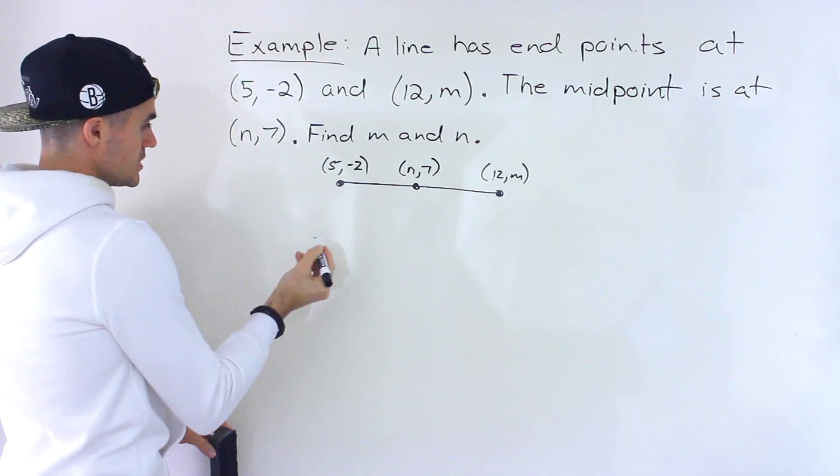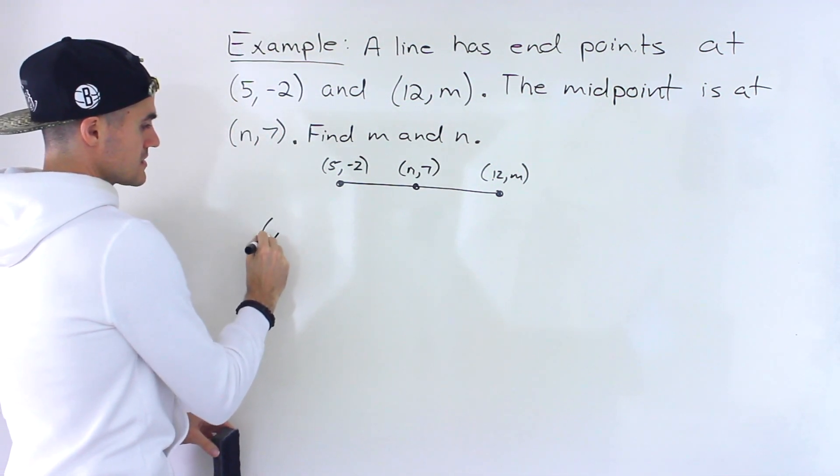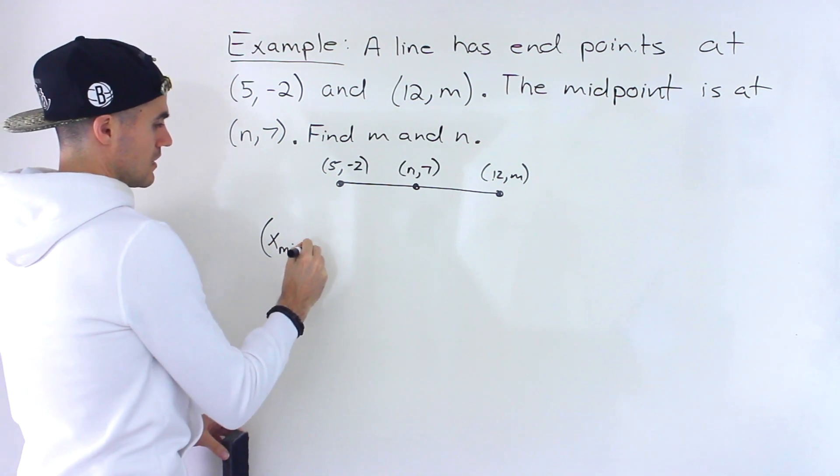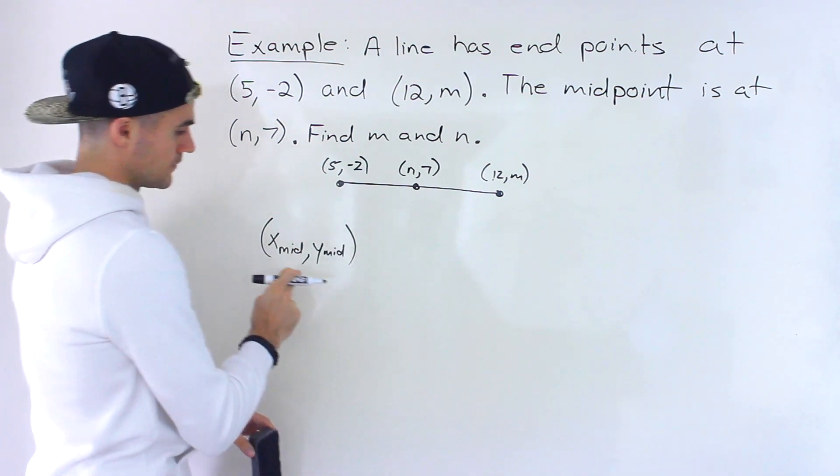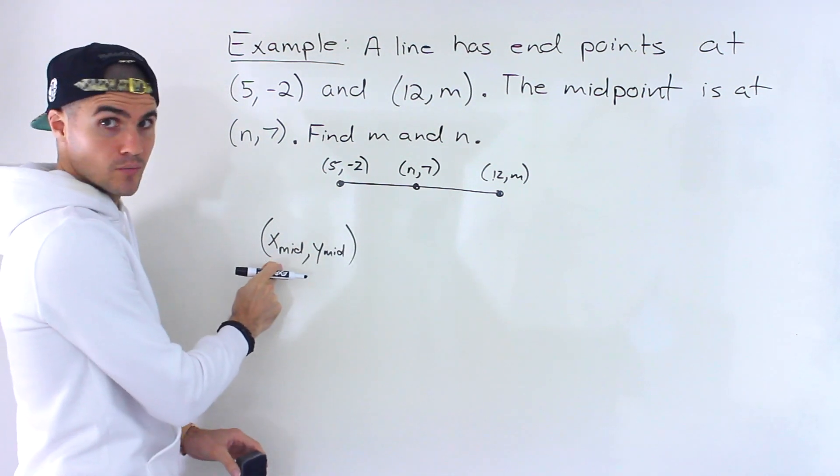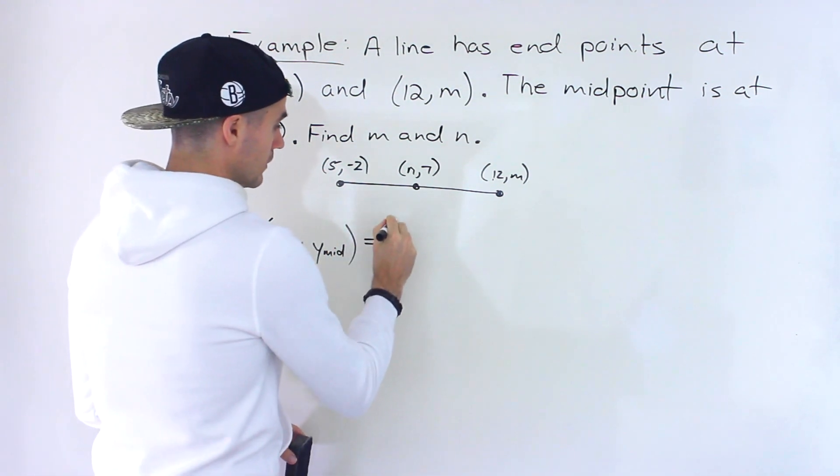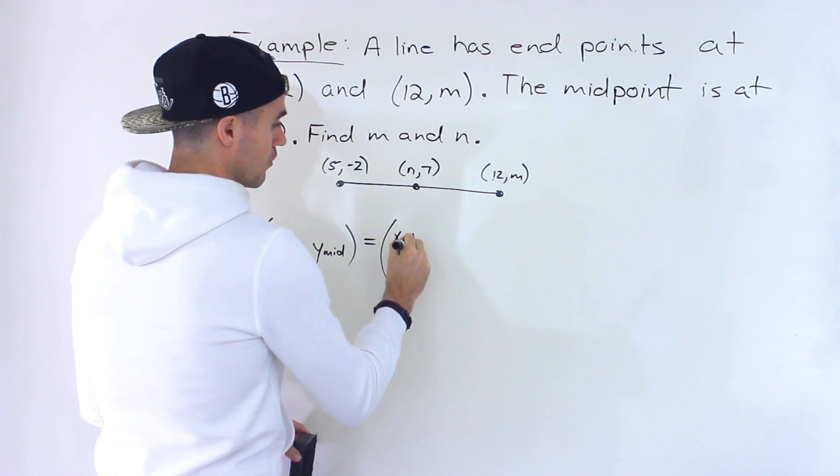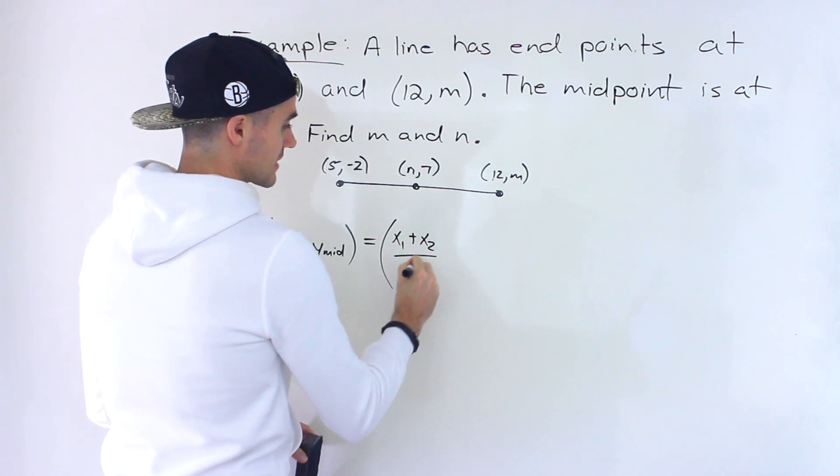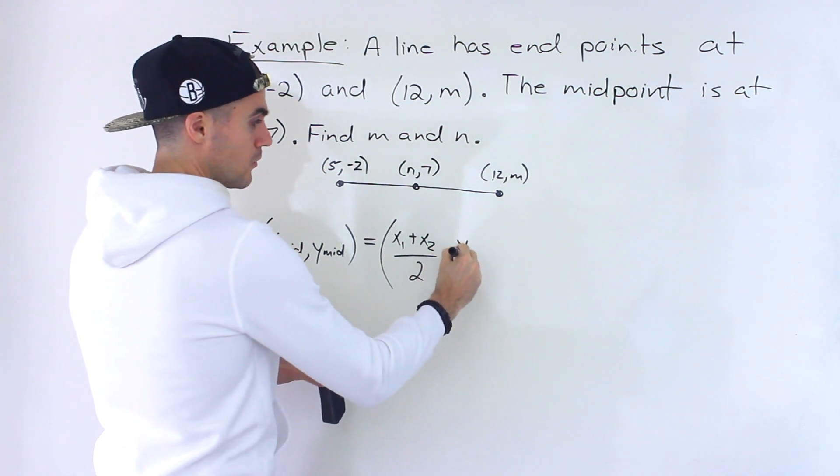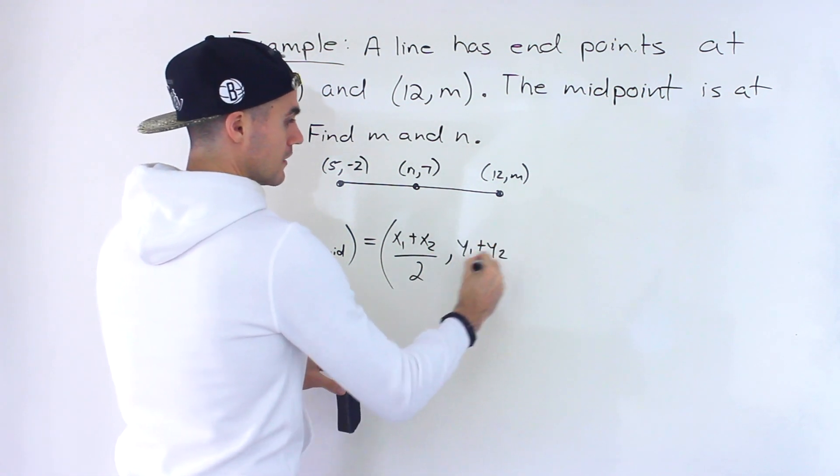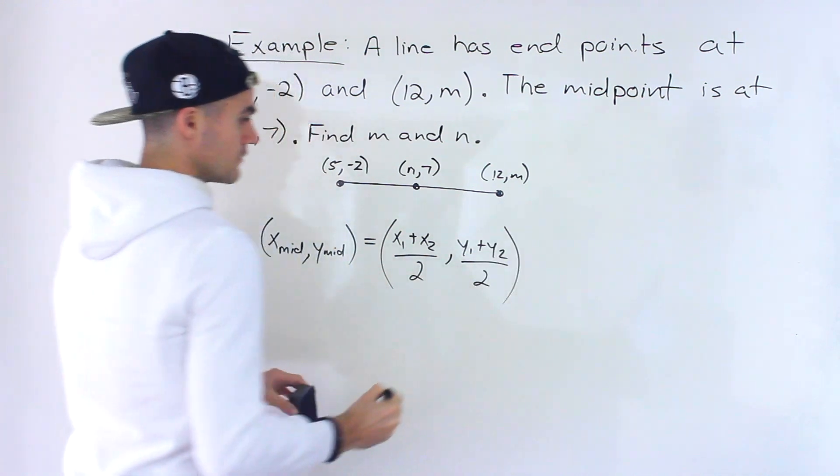Now in general, what are the coordinates of the midpoint? The x and the y value of the midpoint. Well, it's equal to the sum of the x values of the endpoints divided by 2, and then the sum of the y values of the endpoints divided by 2.